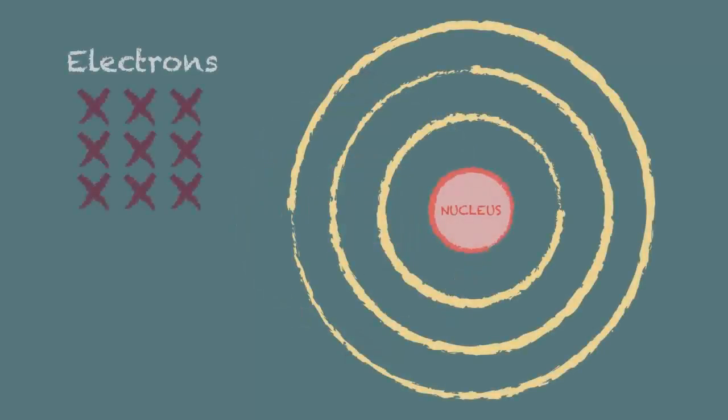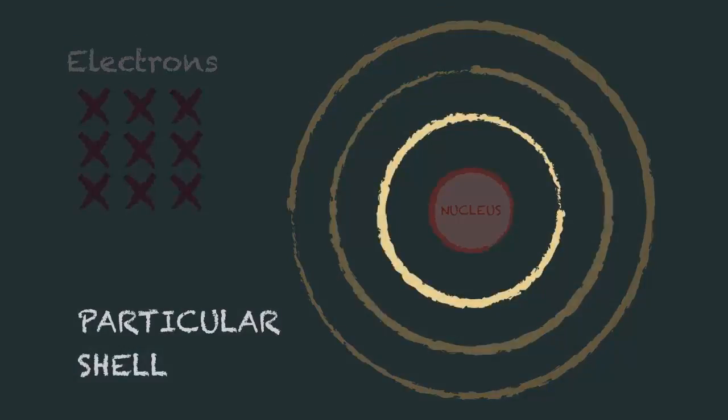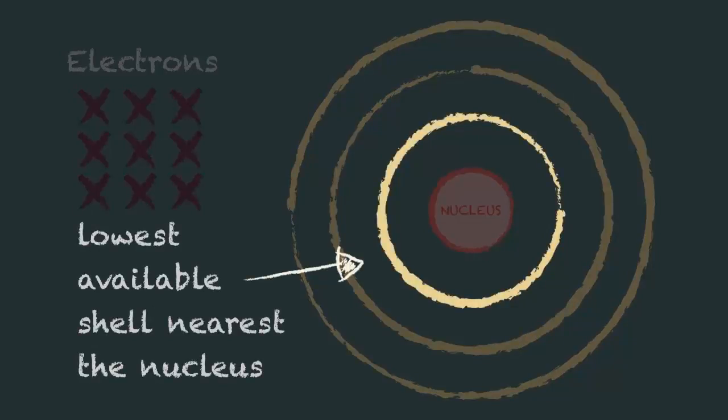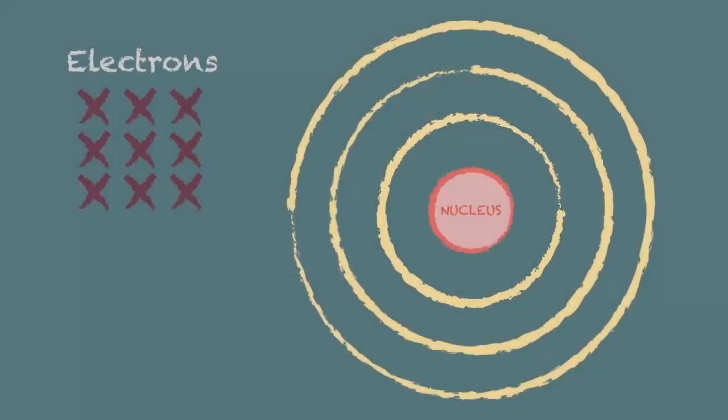Each electron in an atom is in a particular shell and the electrons must occupy the lowest available shell nearest the nucleus. So when we are drawing the electron configuration we have to fill up each shell in turn, starting with the lowest.